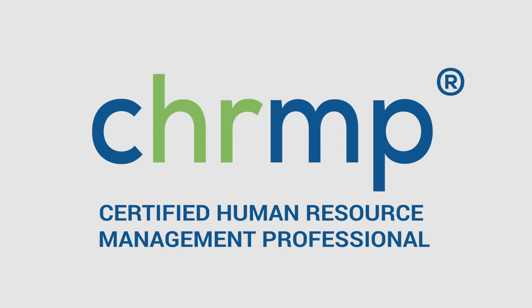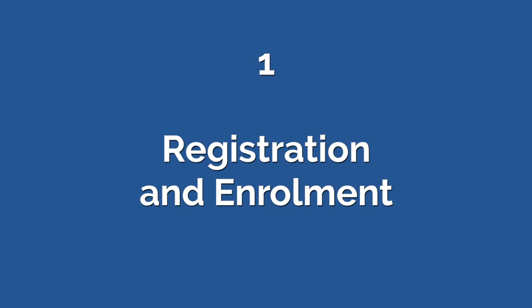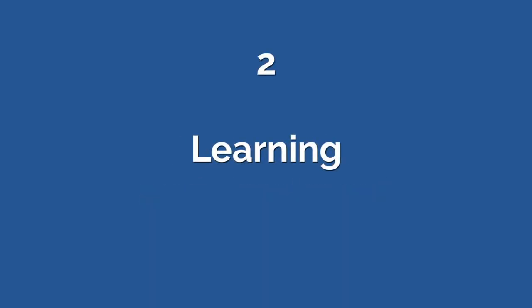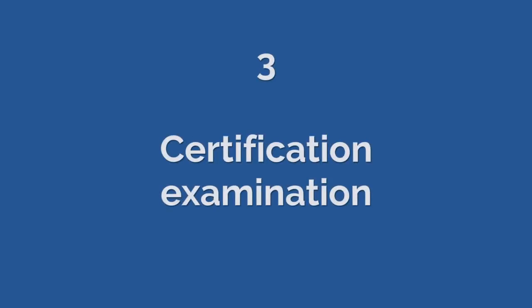There are three parts to the CHRMP certification process. The first part is your registration and enrolment. The second part is when you'll work through the learning resources that are provided and complete the full curriculum. And the third part is where you'll sit your examination either at a Pearson VUE test centre or in the comfort of your own home through web proctoring.